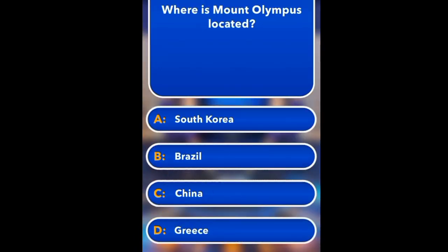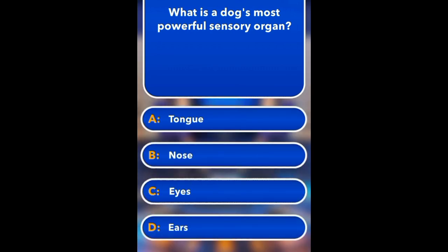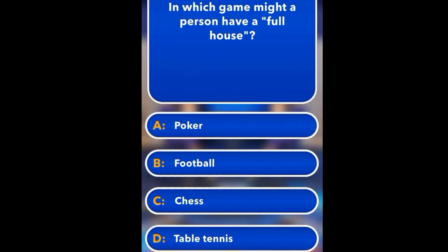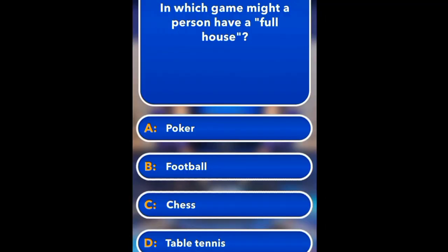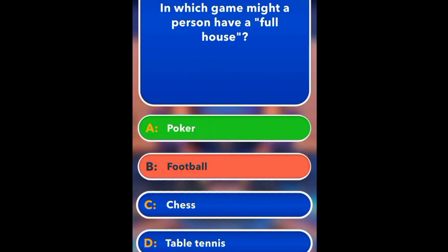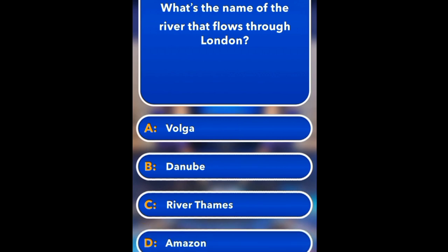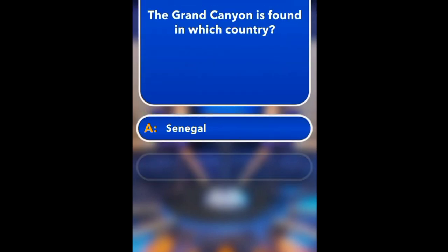Which star can be used to work out where due north is? Proxima Centauri, Polaris, Gamma, Delta Epsilon Virginis. Polaris. Where is Mount Trump located? South Korea, Brazil, China, Greece.